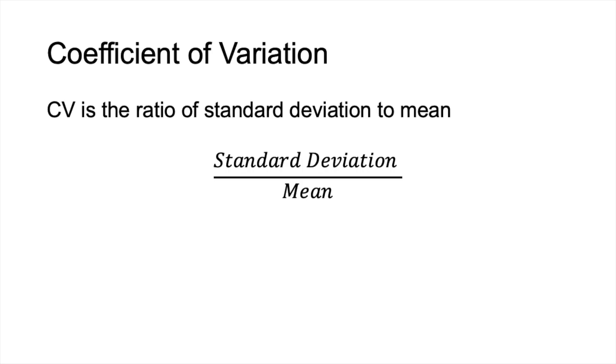CV is the ratio of standard deviation to the mean — that is, standard deviation divided by the mean. It is always reflected in terms of percentage.